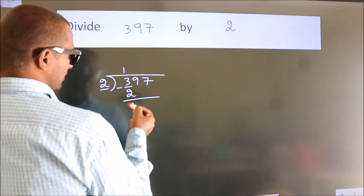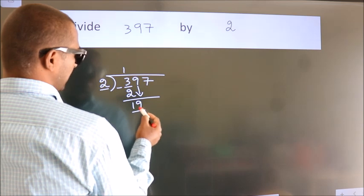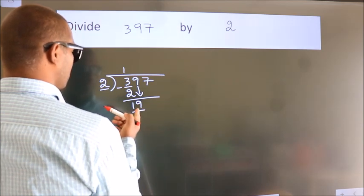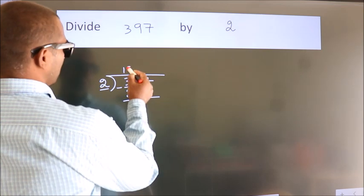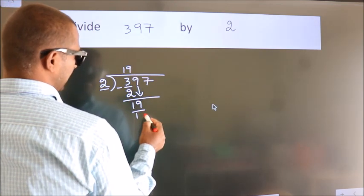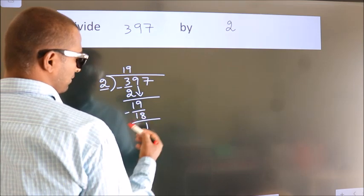After this, bring down the beside number. So, 9 down. So, 19. A number close to 19 in 2 table is 2 times 9 is 18. Now, we subtract. We get 1.